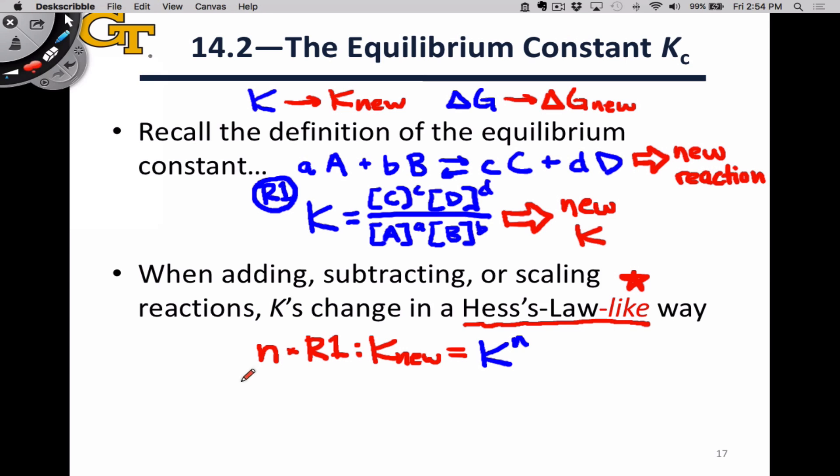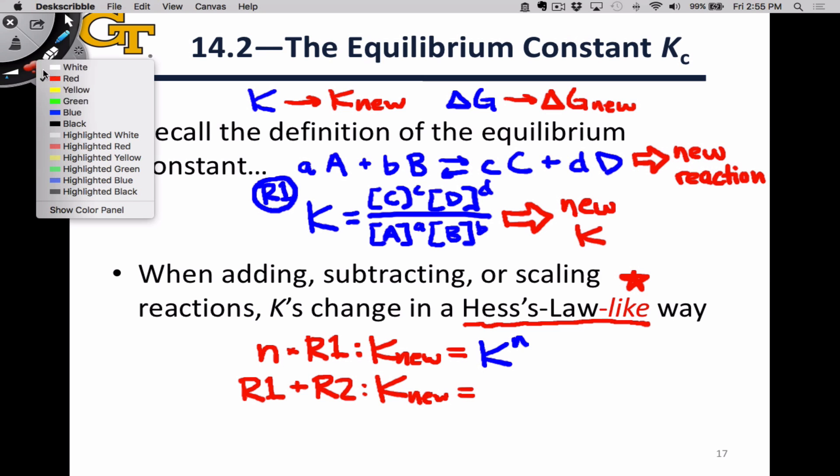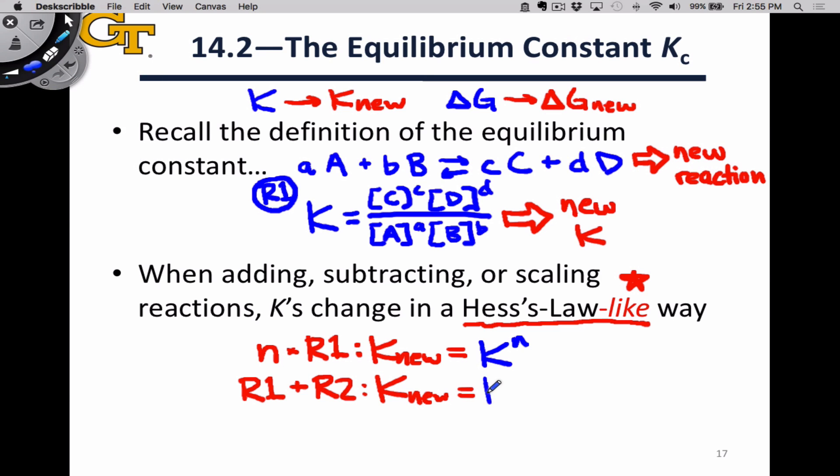When I take two reactions and I add them together, so I take R1 and I add to it some other reaction R2, as it happens, the new equilibrium constant is equal to the product of the equilibrium constants for the separated reactions. So it's K_R1 times K_R2 in this case.